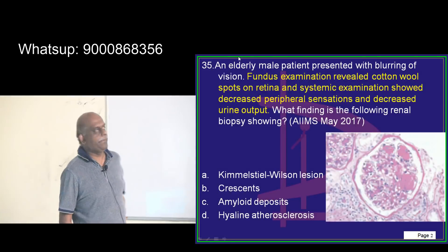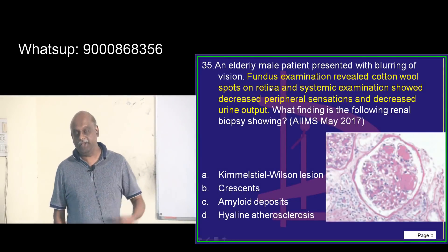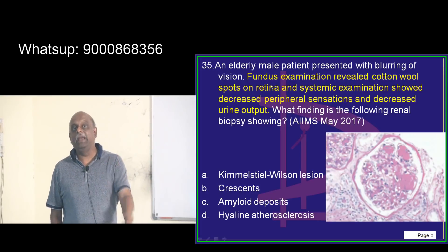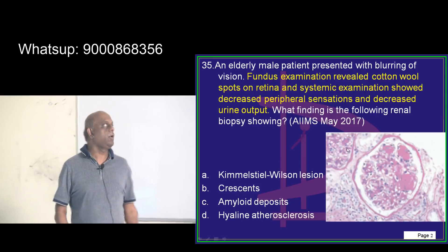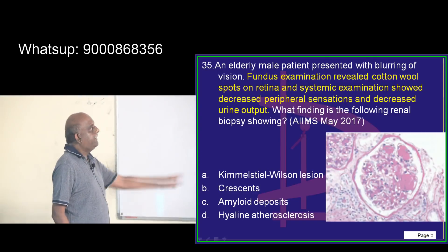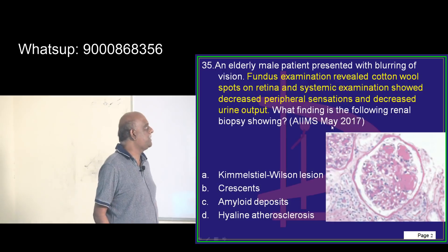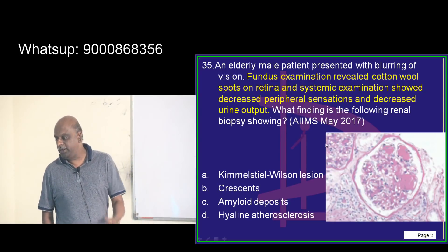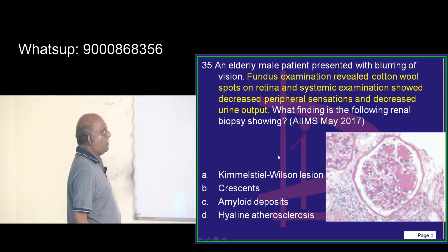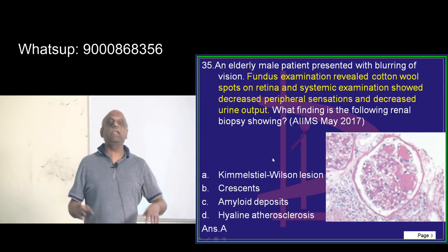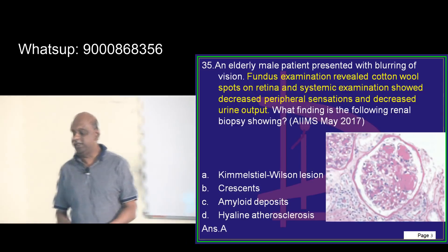An elderly man presents with blurring of vision. Continuing our discussion on AIMS May 2017, the fundus shows cotton wool spots and decreased peripheral sensations, and the renal biopsy has been shown. What are these nodular lesions basically called as? These are called Kimmelstein-Wilson lesions — that is what you need to basically remember.